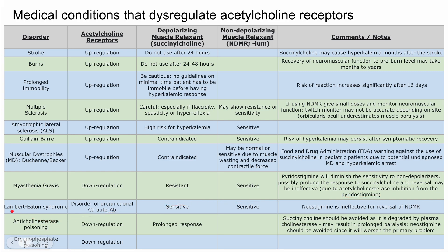Lambert-Eaton syndrome is a disorder of pre-junctional calcium, with autoantibodies against the calcium channels at the neuromuscular junction. These patients will be sensitive to both succinylcholine and non-depolarizing muscle relaxants. Neostigmine is ineffective here, so you cannot use it for reversal of non-depolarizing agents.